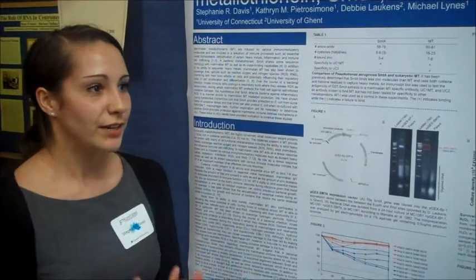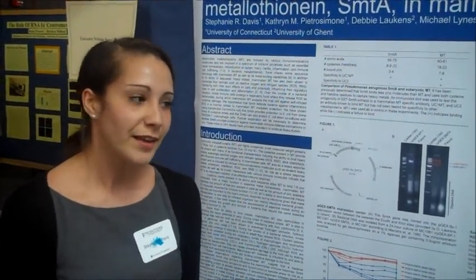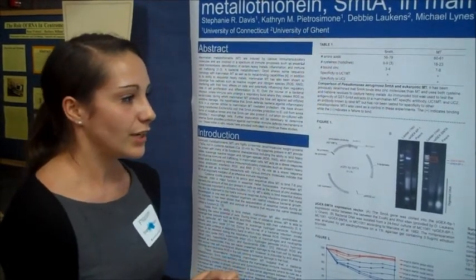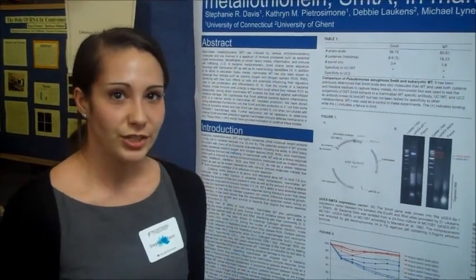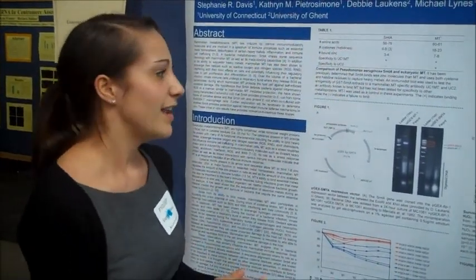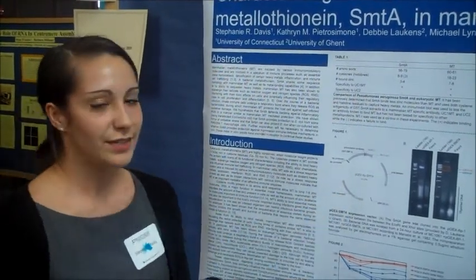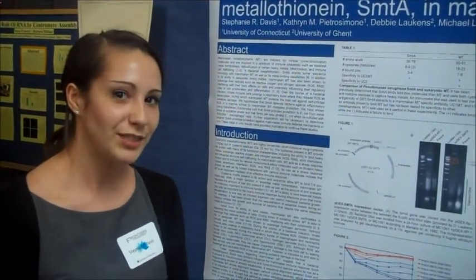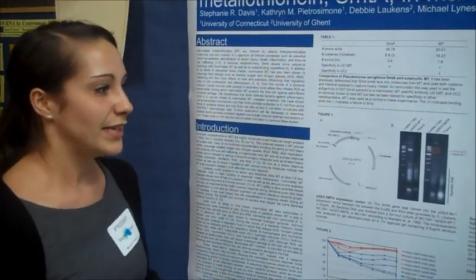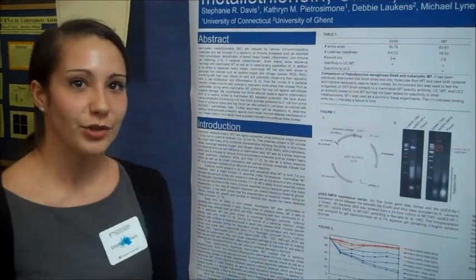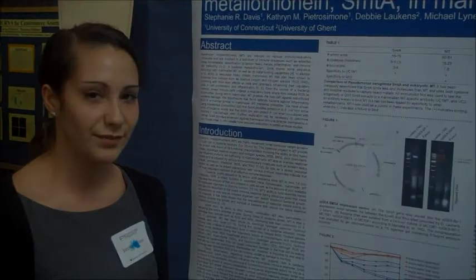During infection, our white blood cells release reactive oxygen species to kill bacteria. So we looked at whether putting SMTA into E. coli would allow the E. coli to survive oxidative stress. We transfected E. coli with an SMTA gene so it could express the SMTA protein, and we also had a group of E. coli that cannot express SMTA, so we could compare the two strains.